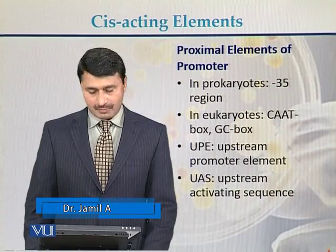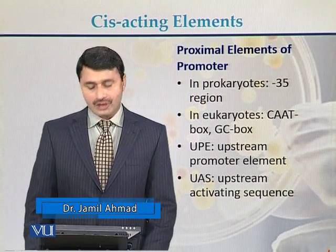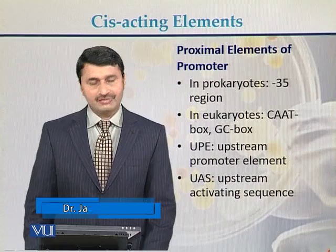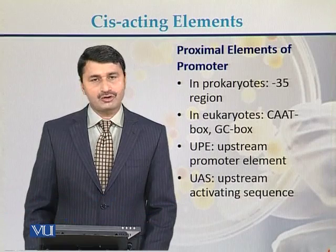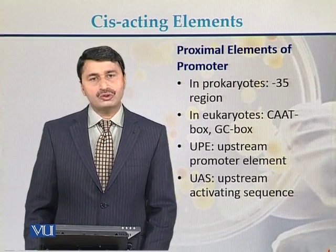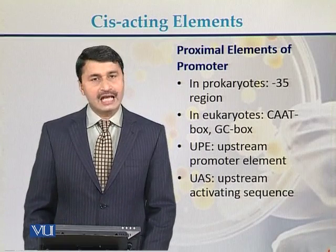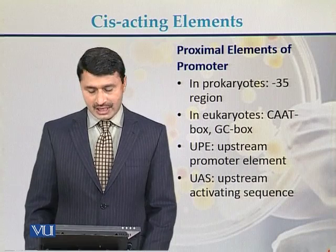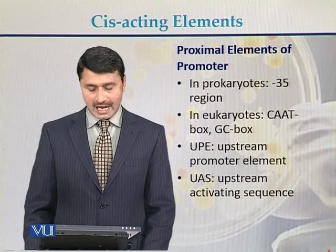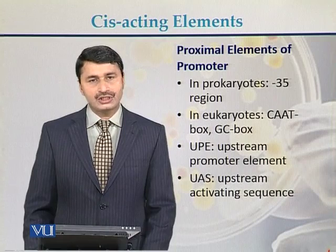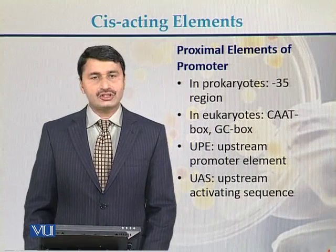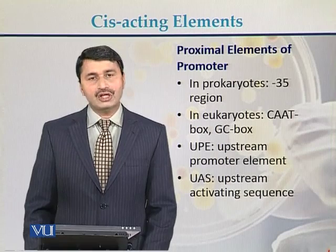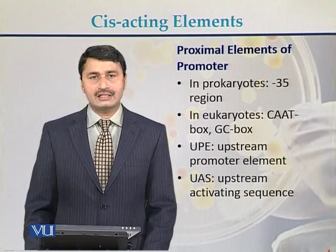Proximal elements of the promoter include sequences at the minus 35 region in prokaryotes. In eukaryotes, these proximal elements can be the CAT box or the GC box. In addition, there can be upstream promoter elements and downstream activating sequences. All of these sequences are called cis-acting elements.